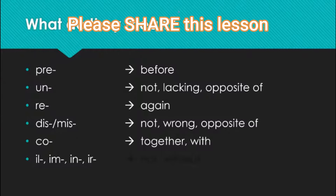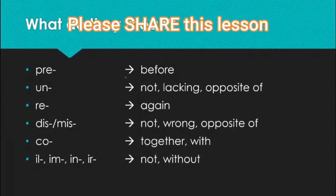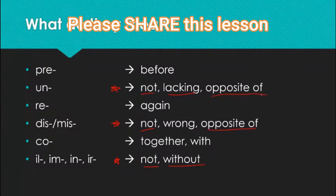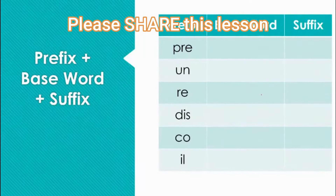Next we have the prefix 'co,' which means together or with. And last, for our most common prefixes, we have 'il,' 'im,' 'in,' and 'ir,' which mean not or without. We can see that 'un,' 'dis,' 'mis,' and these four all similarly mean not, lacking or without, and opposite of. But we can't use them the same way with every word. When you come across words with these prefixes, you will have a better understanding of what they mean.